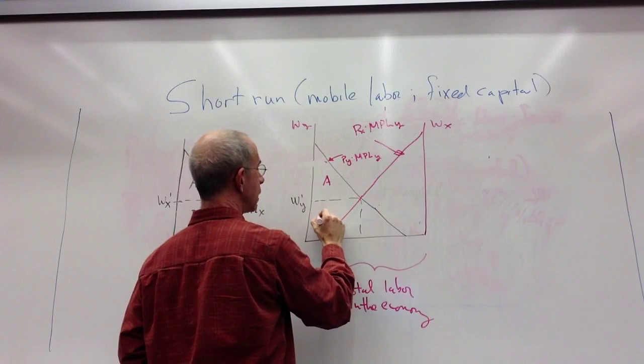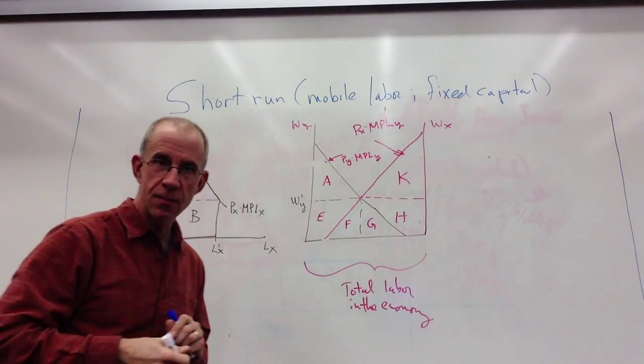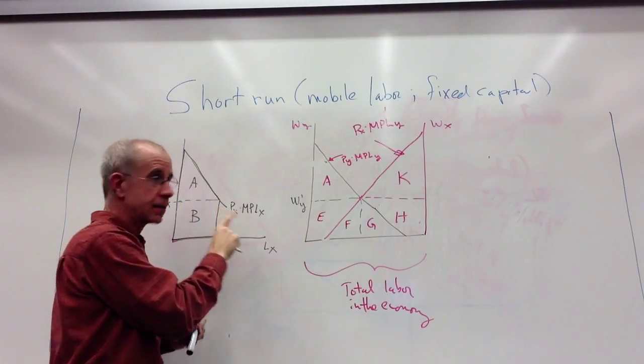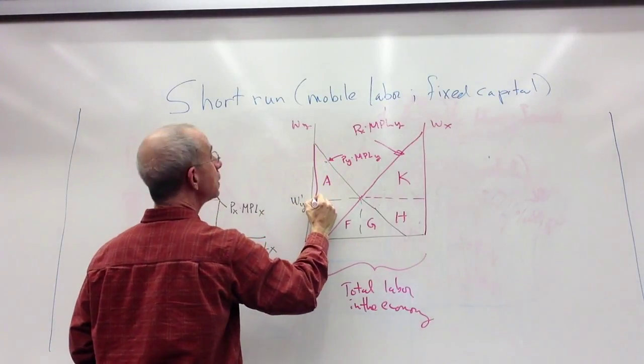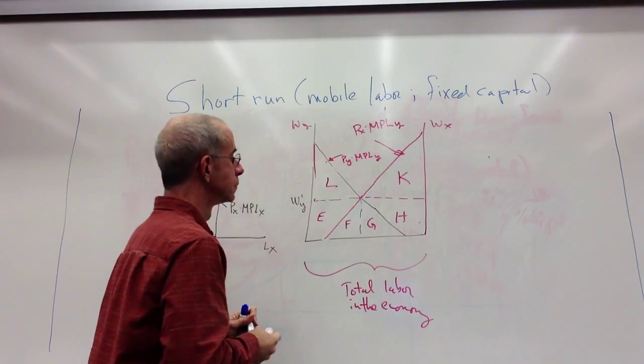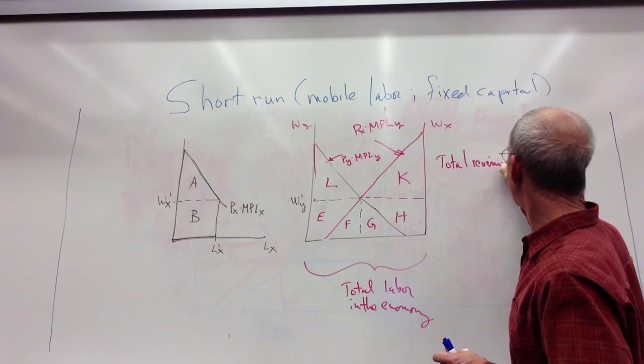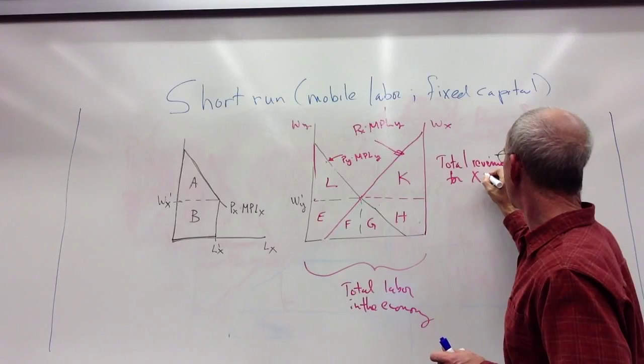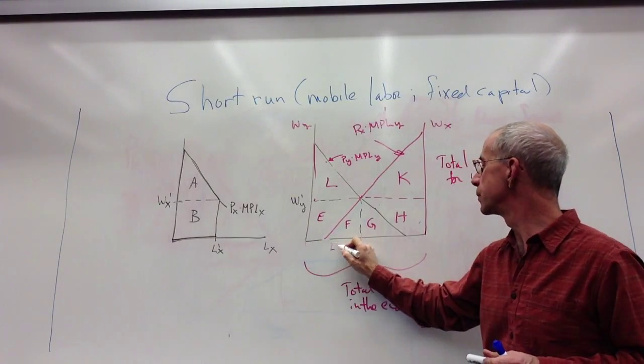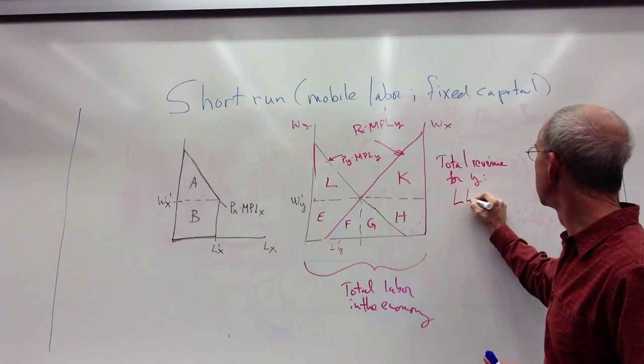Now I'm going to identify these same areas that I've talked about before. The total revenue for Y when you hire this many workers in Y, the total revenue is the area under the demand curve. It is L, E, F, that whole area.